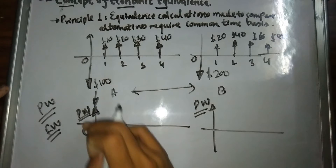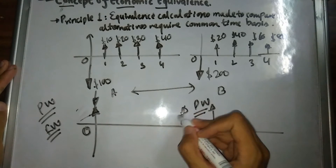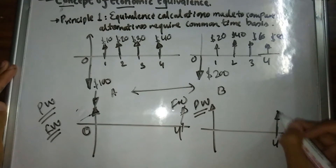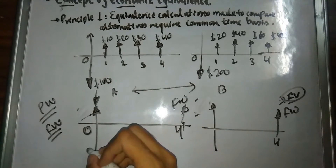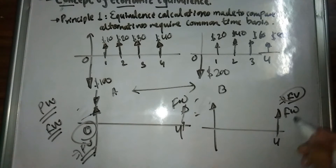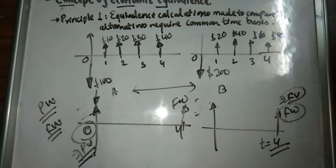Our common time basis is typically time t equals zero for present worth, but calculations can also be made using future worth at the end of the time period — for example, at year four. In either case, we are summing all cash flows but expressed at that common point in time. The choice between present worth and future worth for decision-making is made according to our convenience.